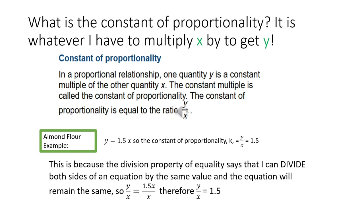But basically, let's look at it with our almond flour example. So we can say that our almond flour, the amount of almond flour that we need to use is equal to 1.5 or one and a half times the number of scoops we use. So the constant proportionality k would be 1.5. And this is because the division property of equality says that I can divide both sides of an equation by the same value, and the equation will remain the same. So if you have y equals 1.5x, and divide both sides by x, you wind up with y over x, where your constant proportionality k equal to 1.5. And I thought that was really cool.